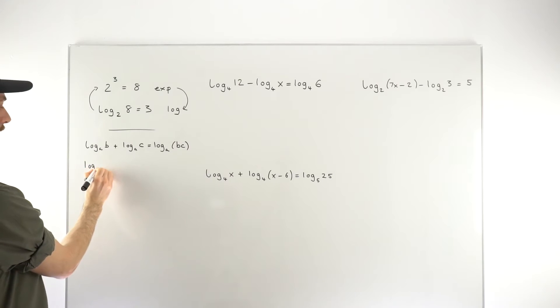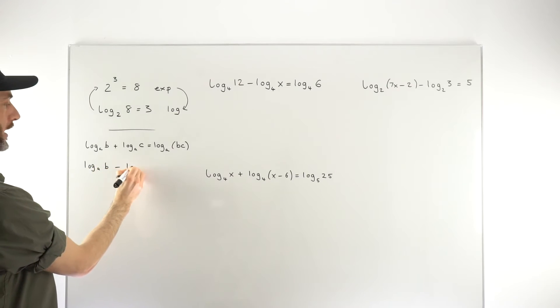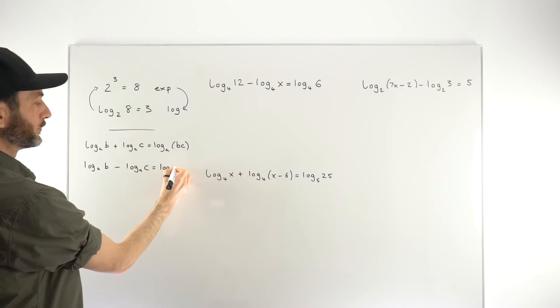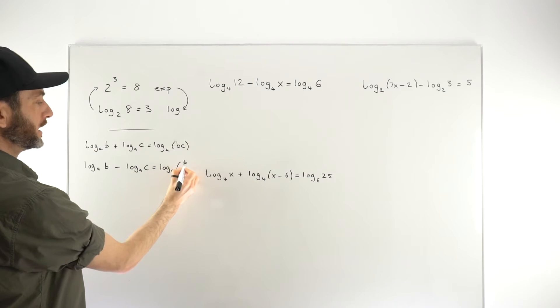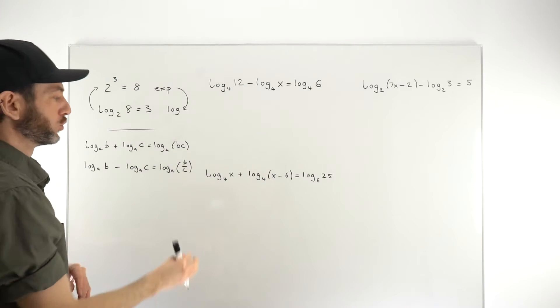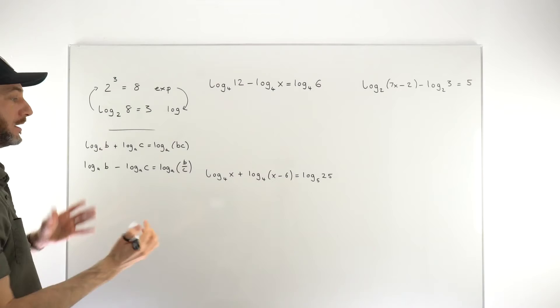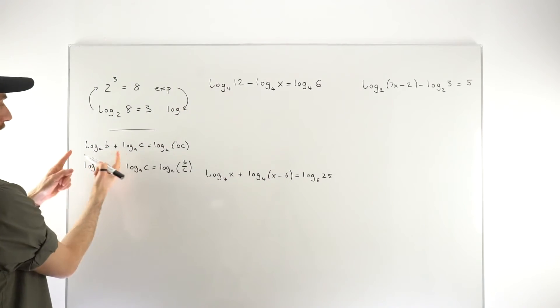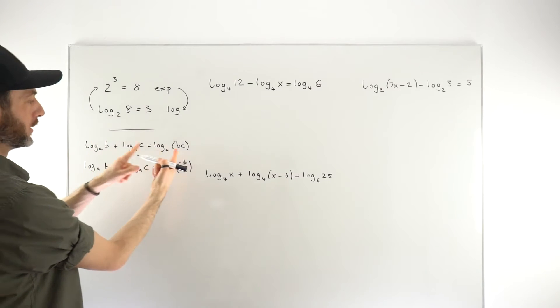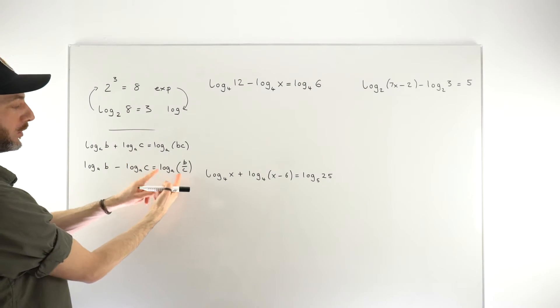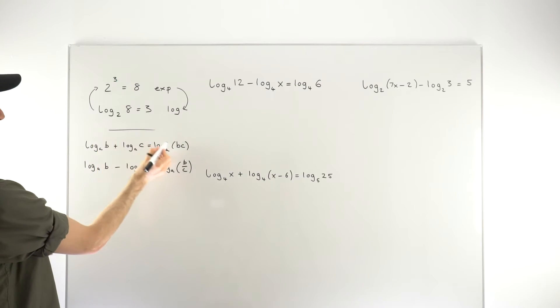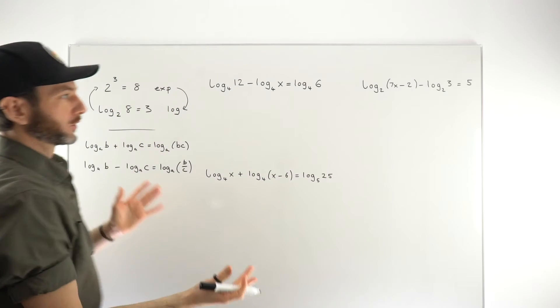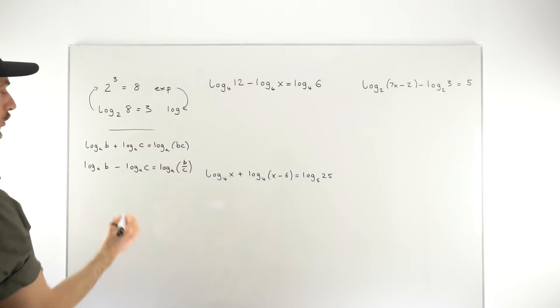Similarly, if we take log to base A of B and we subtract from that log to base A of C, then we would get log to base A of the quotient B over C. Again, fairly familiar rule. If you're dividing, you subtract. Remember that all rules go both ways, left to right and right to left. So you might be using these by taking two logs and turning it into one, or you could start with one log and split it into two. Usually though, we're going this way. Usually you can see in these questions, we've got multiple logs, and you're going to be combining those into a single log.